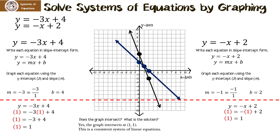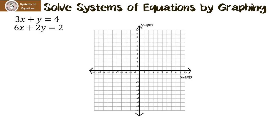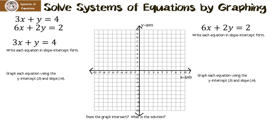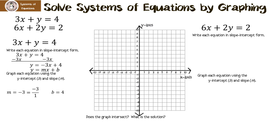Let's graph another system. The first equation is 3x plus y equals 4. We need to write it in slope-intercept form — subtract 3x from both sides to get y equals negative 3x plus 4. The slope is negative 3 over 1 and the y-intercept is 4. Graph the y-intercept at 4, then follow the slope down 3 and over 1, down 3 and over 1.